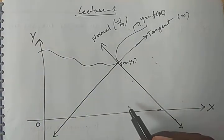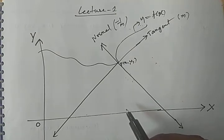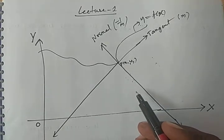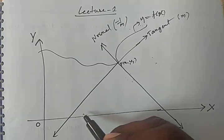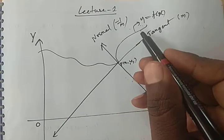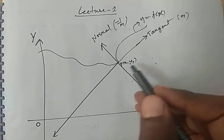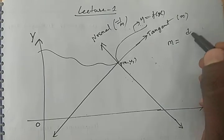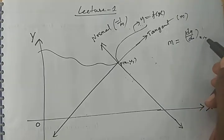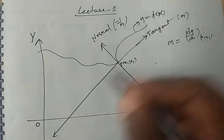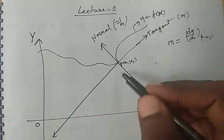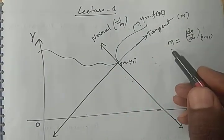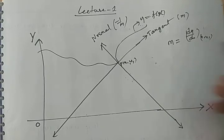We are in derivatives, so where are we using the derivative here? To find the slope m, it is enough to differentiate y = f(x) at the point P(x₁, y₁). This gives slope m = dy/dx evaluated at (x₁, y₁). This will give the slope of the tangent. If we know the slope of tangent, we can find the slope of normal.